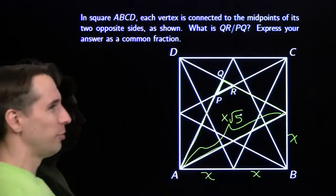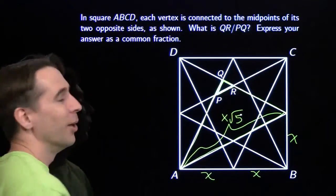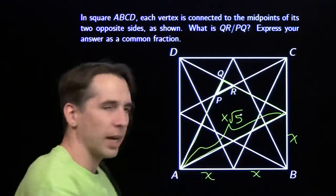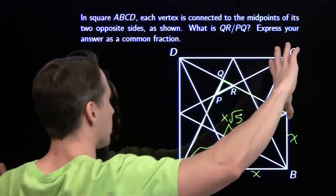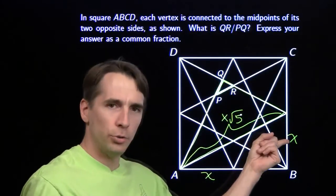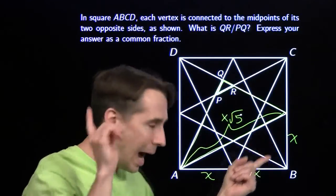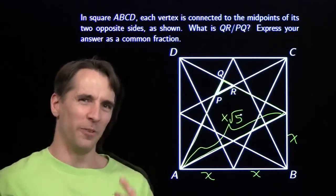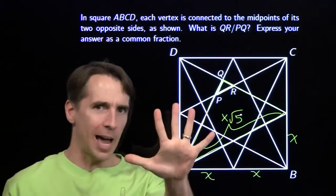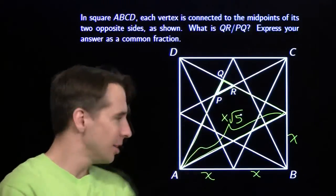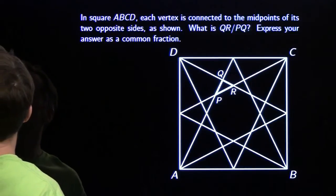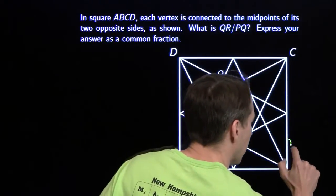This whole thing is x times the square root of 5, and we're interested in pieces of that — fractions of square roots. But we don't have to deal with that, because this ratio is the same no matter what the side length of the square is. So we get to choose what x is. I'm going to choose x to be the square root of 5, because that will make this hypotenuse equal to 5 — no square roots, no fractions.